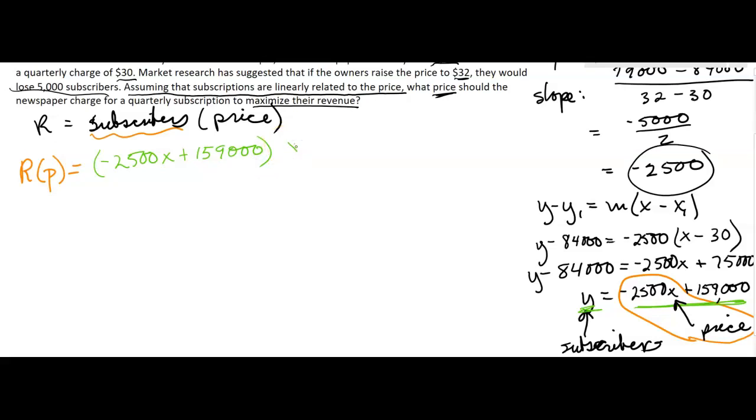Oh, you know what, I made it a p and I should have had that be an x. That's what I get for not using good letters. So this is revenue based on x, and x is representing the price.